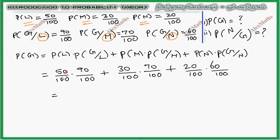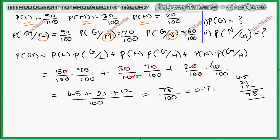If we reduce the numbers, total numerator is 45 plus 21 plus 12, whole divided by 100. So 78 by 100, which is 0.78. So first part complete.